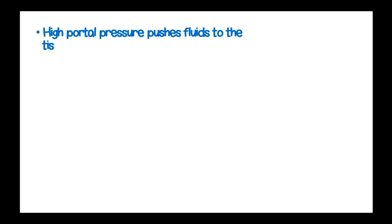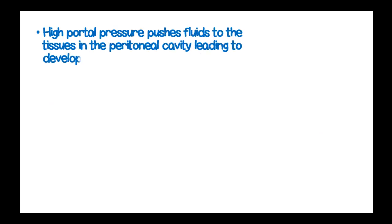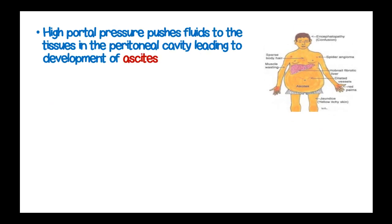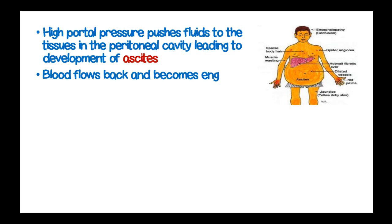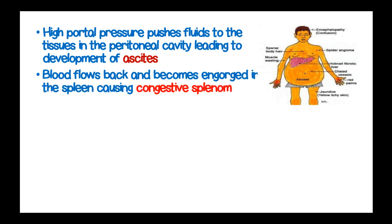High portal pressure pushes fluids into the tissues of the peritoneal cavity, leading to leakage of fluids causing ascites — that is, accumulation of fluids in the peritoneum. Blood flows back and becomes engorged in the spleen, causing congestive splenomegaly.